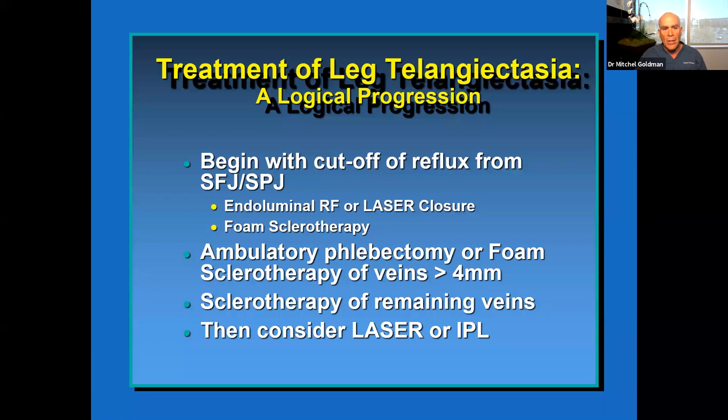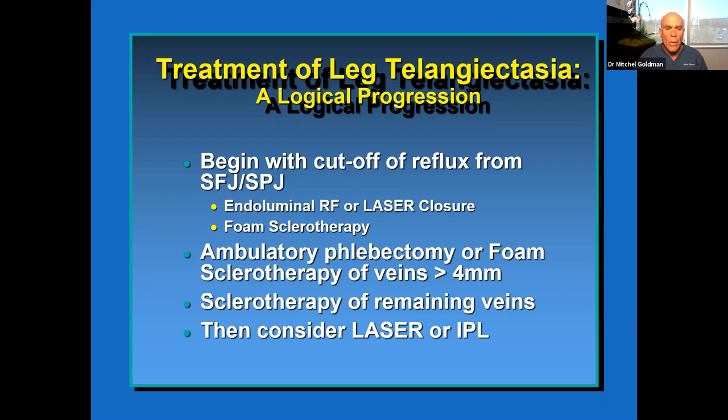When you treat leg veins, there is actually a scientific, logical way to do it — it's not just sticking a needle into the vein or using a laser to make the vein go away. You have to treat it like any medical condition. The term telangiectasia means spider veins. Varicose veins are more like the size of your finger. SFJ and SPJ stand for saphenofemoral junction — those are the large veins that historically required stripping.